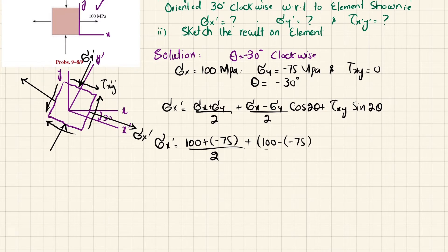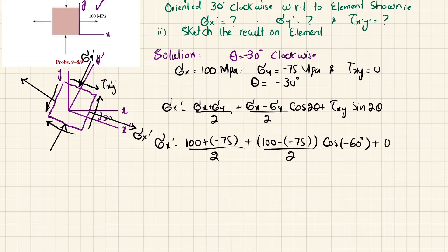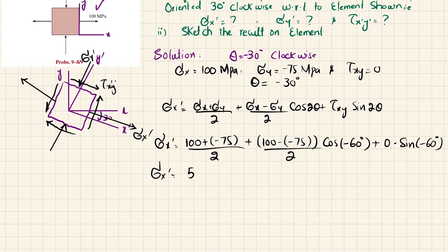Since 2 theta equals minus 60 degrees and tau x y is 0, substituting the values into the formula gives sigma x dash equal to 56.25 MPa.